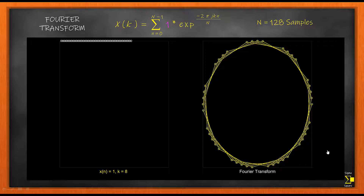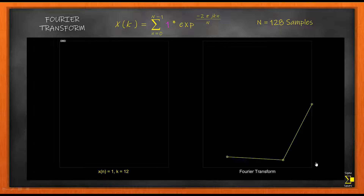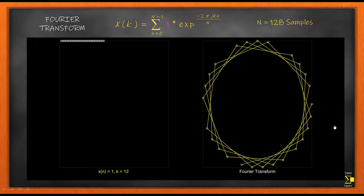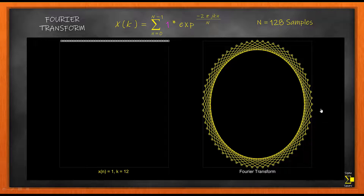This is because we are indexing from 0, so you can say the circle is filled almost 8 times with 128 points. For k equal to 12, you are going to go over this circle 12 times. This demonstrates that the Fourier transform has a cyclic property, and that cyclic property is what is normally referred to as the frequency of your signal.